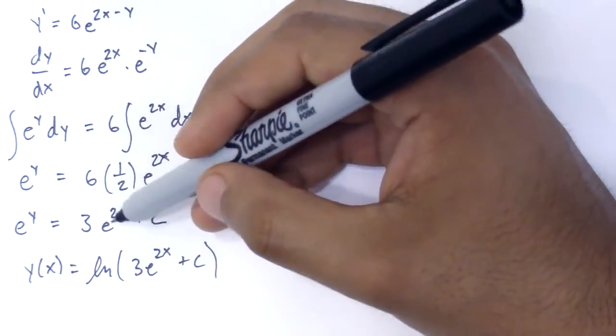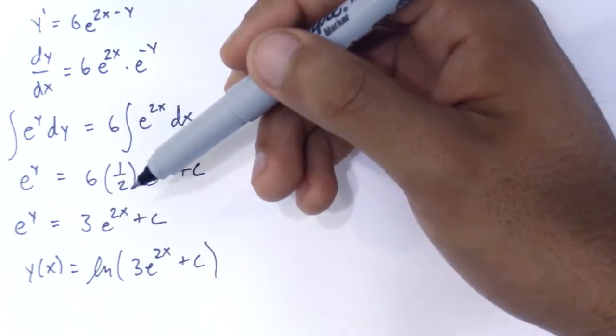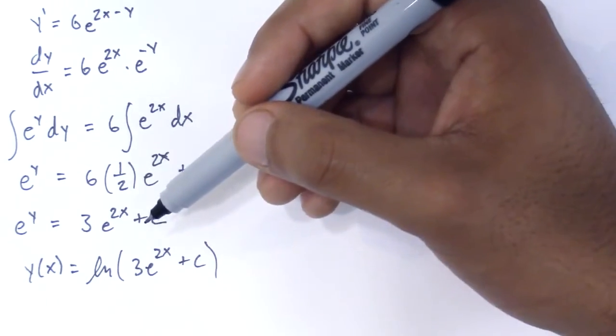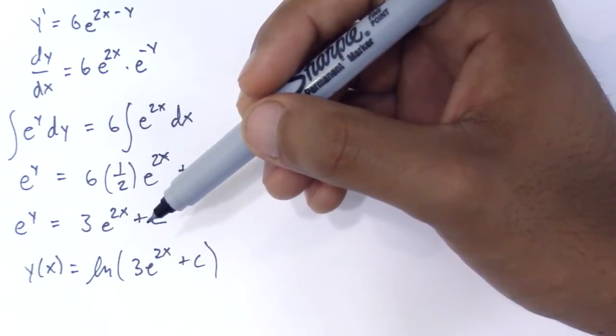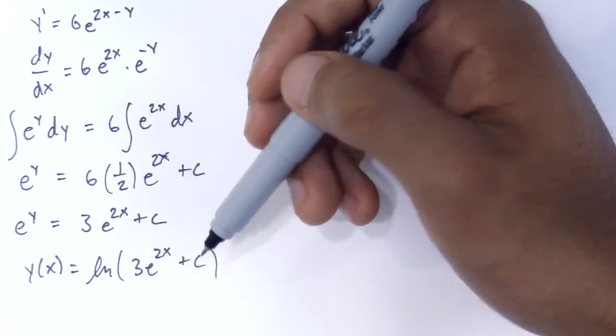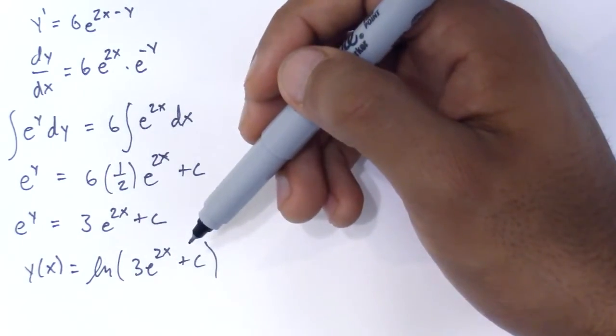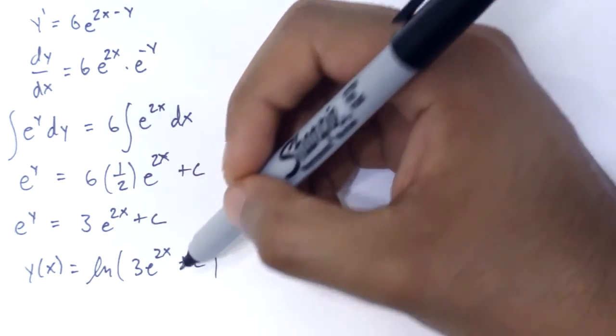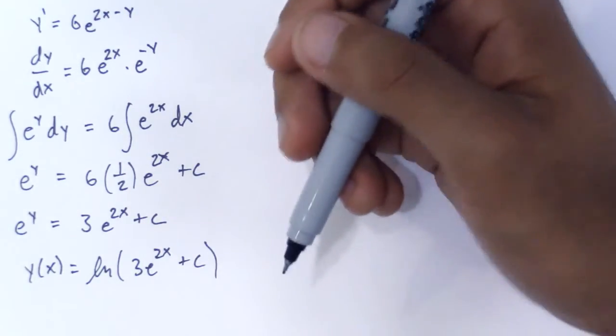absolute values. Because that e to whatever exponent is always positive - that includes the negative exponents, because that's just simply a fraction. And e^(2x), e^x, e^(-x) is always above the x-axis, so this is always positive. So I can use parentheses. There you go.